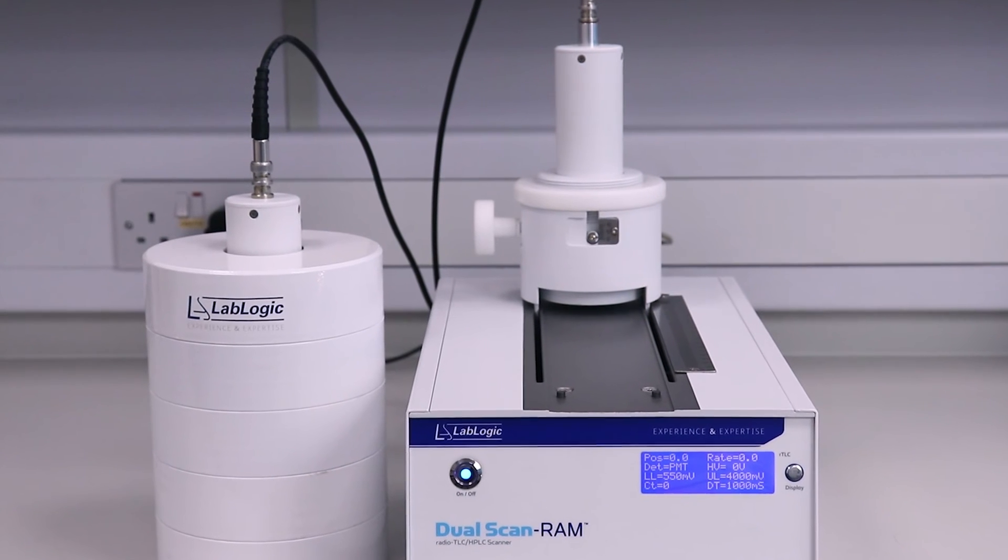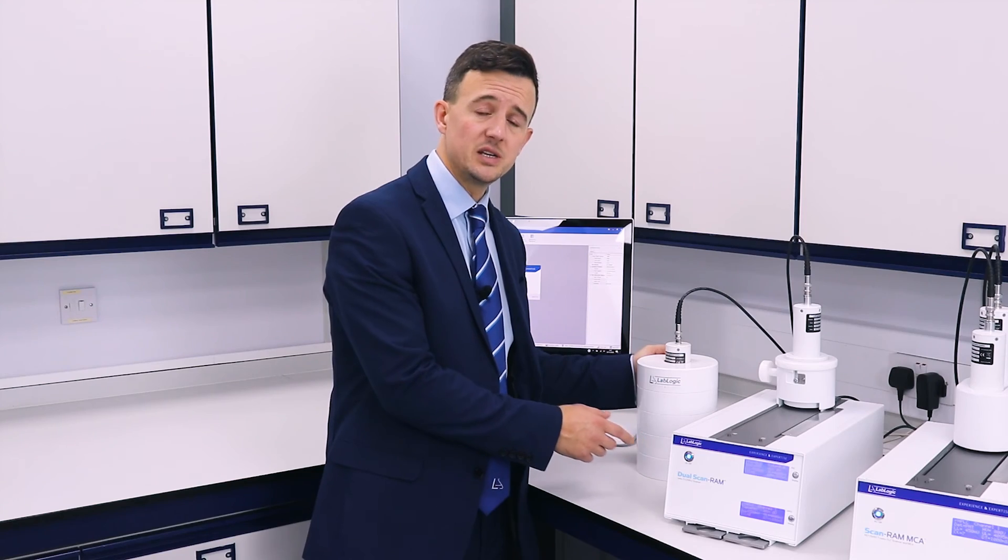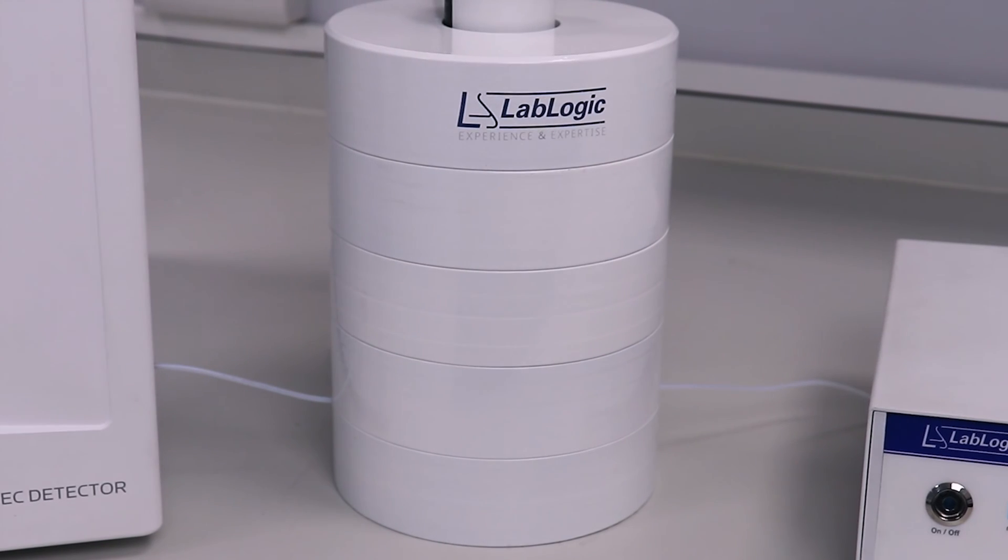The radio HPLC unit has a second detector which sits inside a lead shield. The eluate line from the HPLC runs through the lead shield and is measured by the detector.